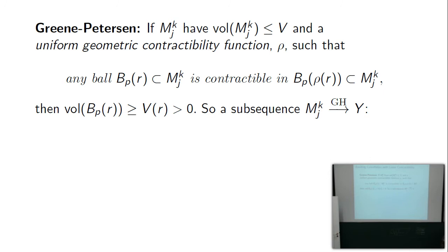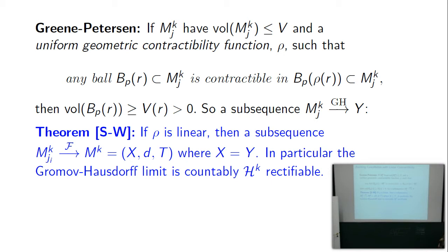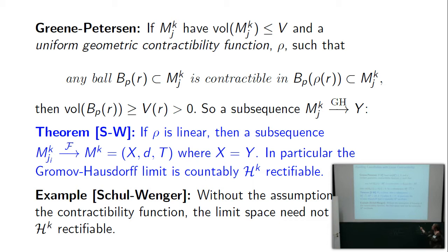Greene and Petersen's contractibility condition: ball B(p,R) is contractible within B(p, rho(R)), which gives a uniform volume lower bound — volume of B(p,R) is at least V(R) — that in turn gives a number N(R) of disjoint balls, allowing a Gromov-Hausdorff limit. If rho is linear, then the Gromov-Hausdorff and intrinsic flat limits agree and the Gromov-Hausdorff limit is countably H^k rectifiable. Schul and Wenger made an example showing that if the contractibility function is not linear, one can construct a sequence with a Gromov-Hausdorff limit that is not countably rectifiable.